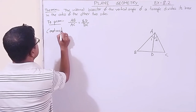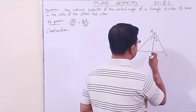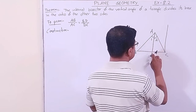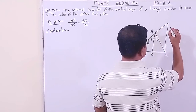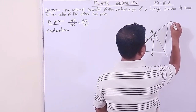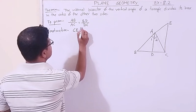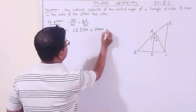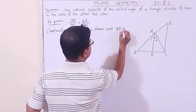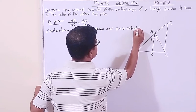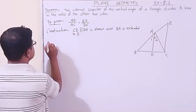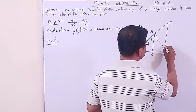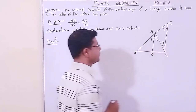Construction: CE is drawn parallel to DA, and BA is extended to meet CE at point E. Now let us name the angles: this is angle 3 and this is angle 4. Let us start the proof, which is very easy.